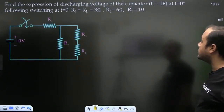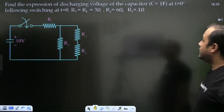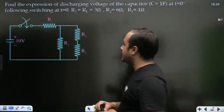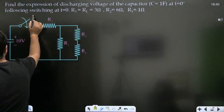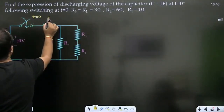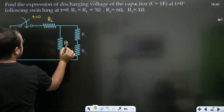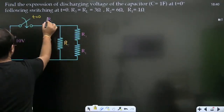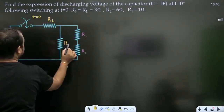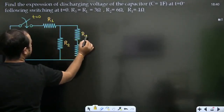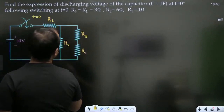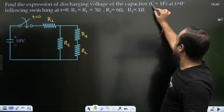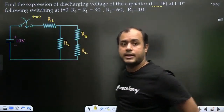Agla: find the expression for discharging voltage of a capacitor, C = 1 farad, switching at T = 0. R1, R2, R3, RL diye hain. Capacitor ke across initial voltage dikhaya rakha hai. Pehle ki tarah hi karo — initial condition nikalo, tau nikalo, tab equation aayegi.